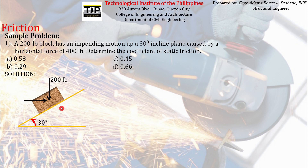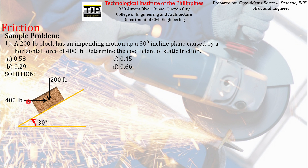According to the problem, the block has an impending motion up the incline — meaning it's very close to moving upward but hasn't moved yet — because there is a horizontal force of 400 pounds being applied to the block. If you can imagine pushing a block horizontally, the block will tend to move upward along the incline.